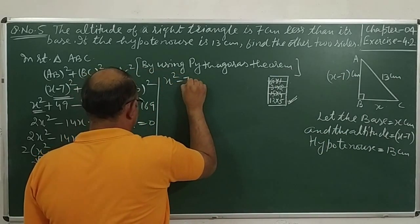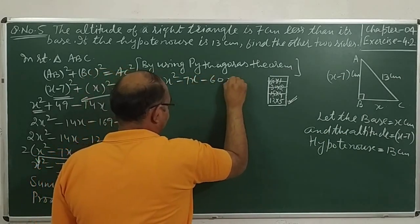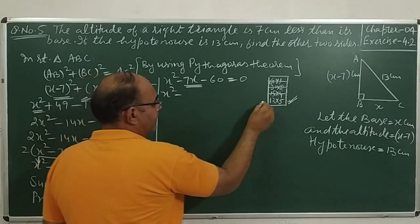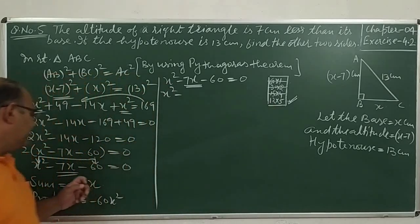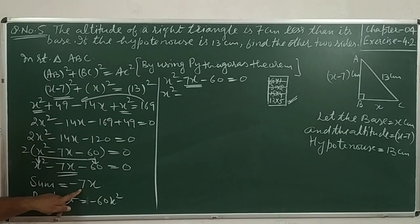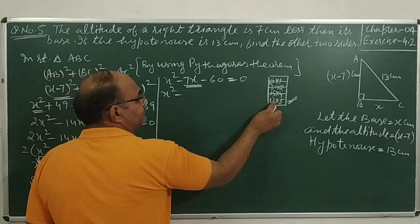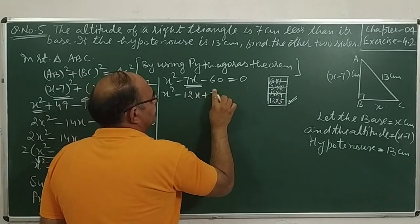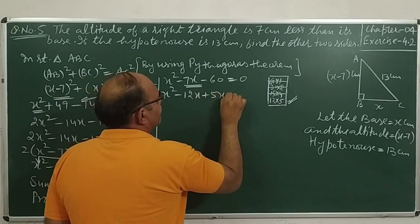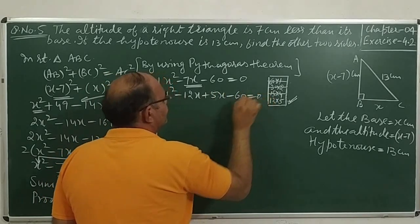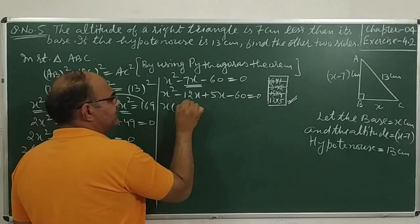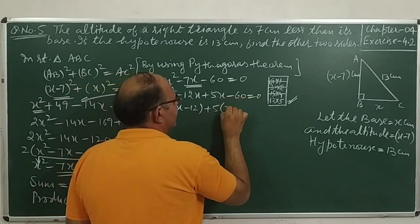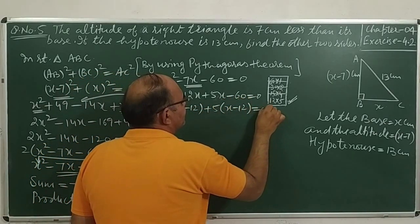So x square minus 7x minus 60 is equal to 0. We write minus 7x as minus 12x plus 5x. So x squared minus 12x plus 5x minus 60 is equal to 0, giving us x times (x minus 12) plus 5 times (x minus 12) is equal to 0.